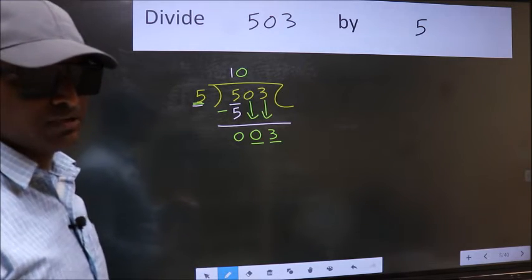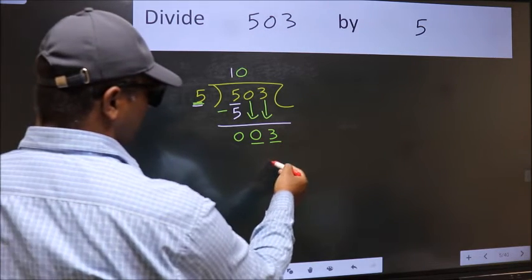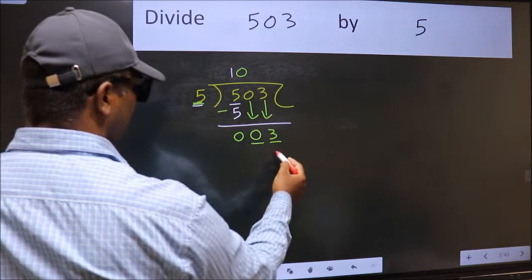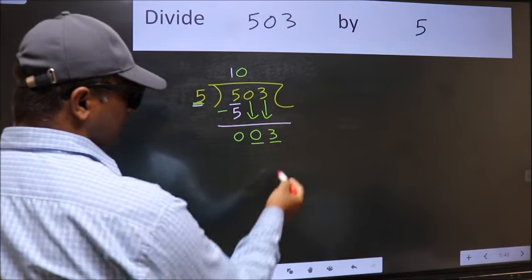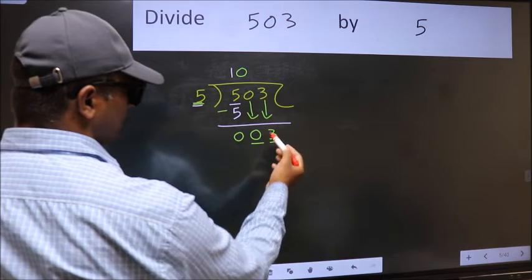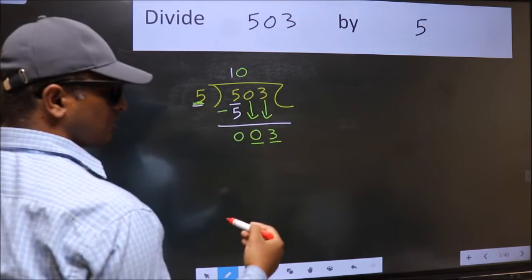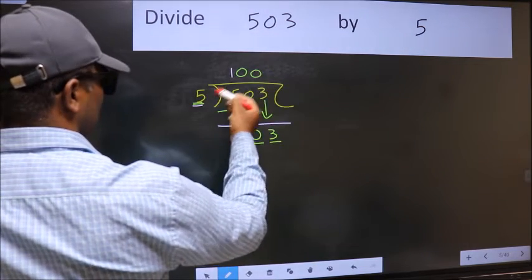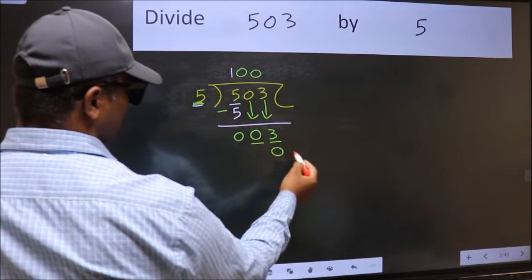Instead, what you should think of doing is, which number should we take here. If I take 1, we will get 5. But 5 is larger than 3. So what we should do is, we should take 0. So 5 into 0, 0.